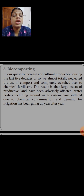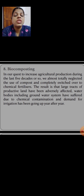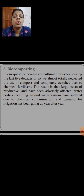Nowadays we have totally neglected the use of compost and switched over to chemical fertilizers, which are harmful for the growth of plants and for human beings who use those plants. The large tracts of productive land have been adversely affected — the texture and nature of the soil is harmed, affecting the agricultural system. The groundwater system has also suffered due to chemical contamination, and the demand for irrigation has been going up year after year.